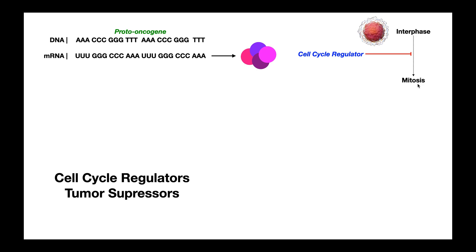When cells divide, that mutation would just propagate over and over again. So what we have between the phases of interphase are checkpoints. At each checkpoint, certain things are verified — for example, is there any DNA damage or DNA mutations? Is there any significant other types of cell damage? That's why we have these cell cycle regulators. If there are any significant issues, they halt the cell cycle.